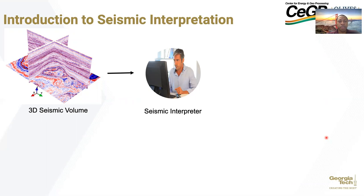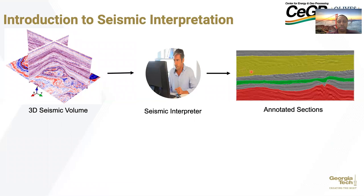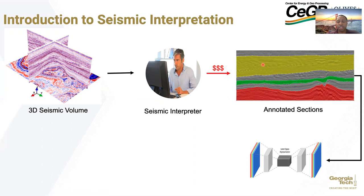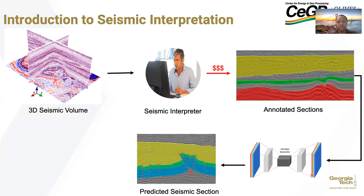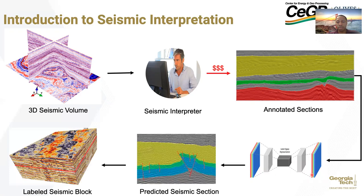In a supervised learning framework, an interpreter labels part or all of a 3D seismic volume and partitions them into training and test sets. This is expensive and laborious. For instance, we have an interpreter labeling part of the seismic facies of a section of the F3 block. This is expensive because of the number of years of experience required for an interpreter to correctly label seismic sections. These labeled sections are passed with their corresponding seismic sections into a machine learning model to get predicted seismic sections, which are then combined into a labeled seismic volume.